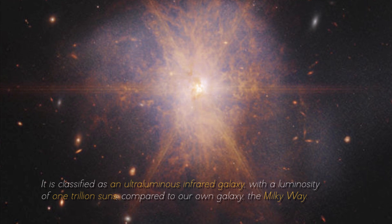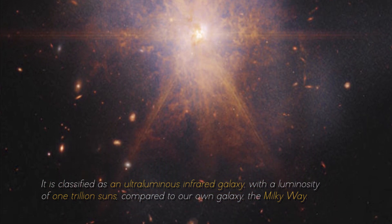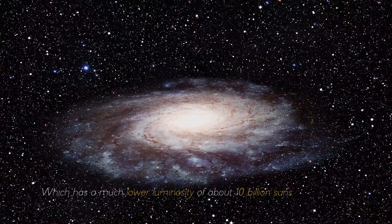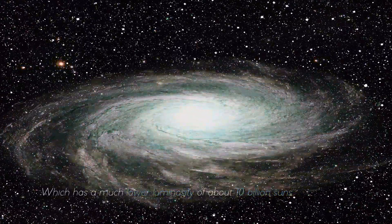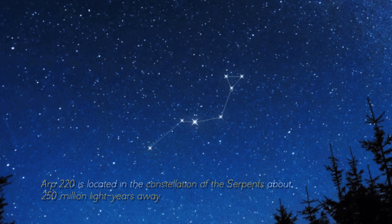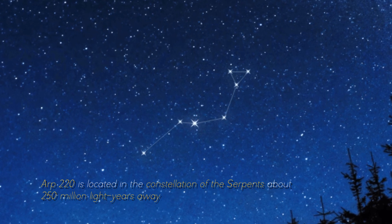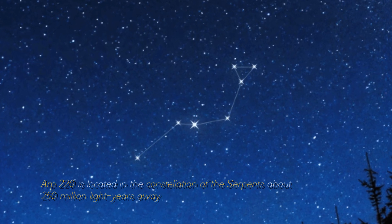It is classified as an ultra-luminous infrared galaxy, with a luminosity of 1 trillion suns compared to our own galaxy, the Milky Way, which has a much lower luminosity of about 10 billion suns. ARP 220 is located in the constellation of the Serpents, about 250 million light-years away.